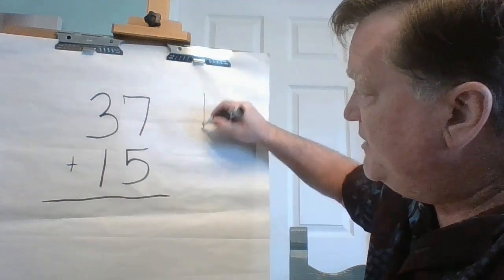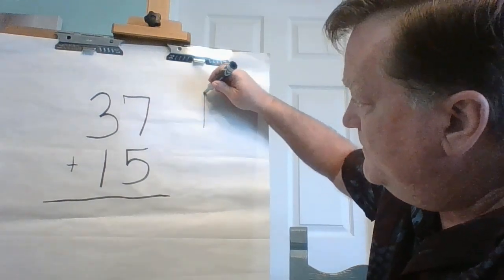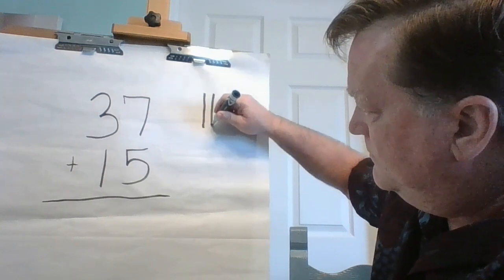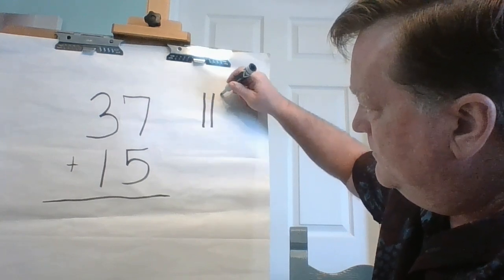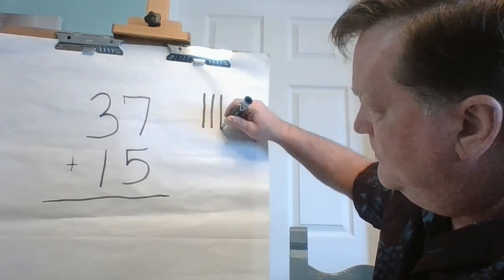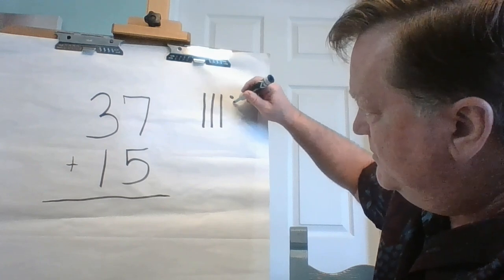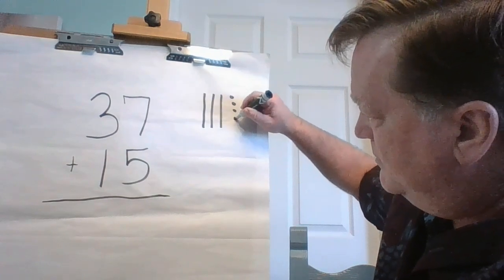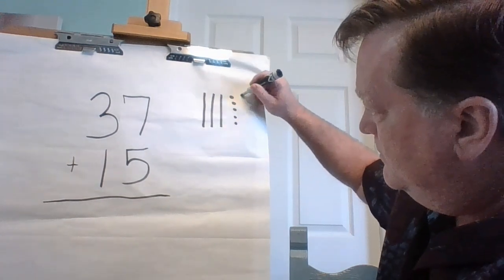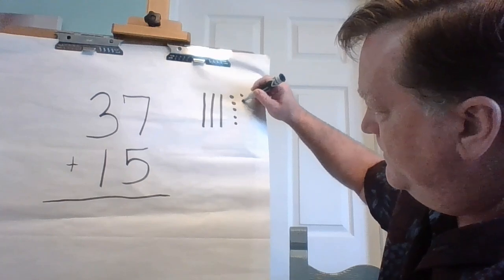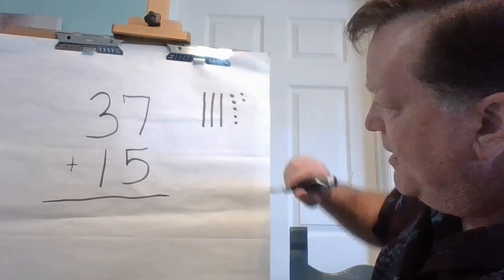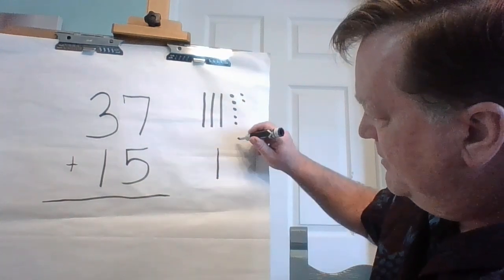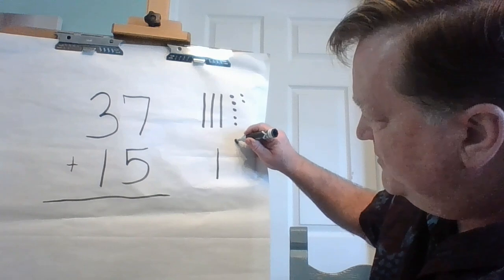37 has three tens and seven ones. And 15 has one ten and five ones.